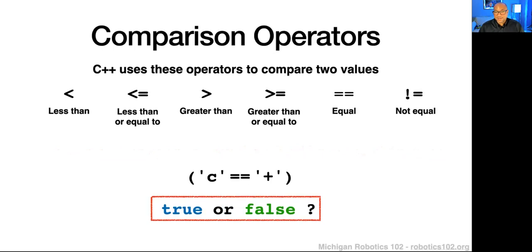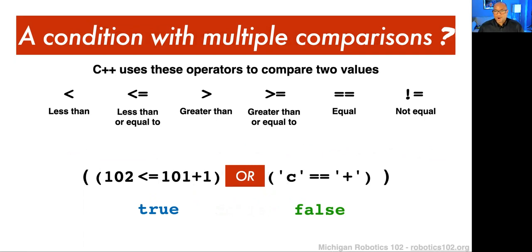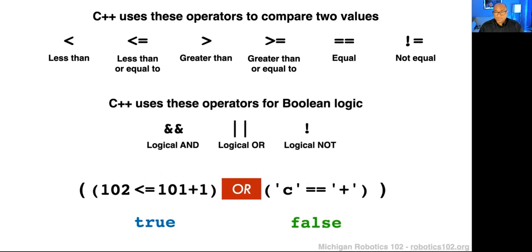What happens when we have a condition that requires multiple comparisons? Let's say I wanted my if statement to check whether two conditions hold — one I know is true and another that evaluates to false. How do I combine them? If I didn't care which one was true but just wanted at least one to be true, C++ has a way to combine these comparisons through operators for Boolean logic. We can combine these together through AND, OR, and NOT — where NOT doesn't combine but does a negation of an argument.